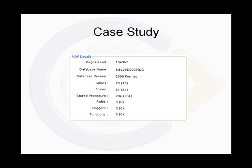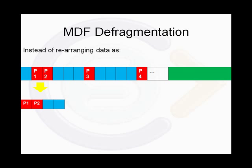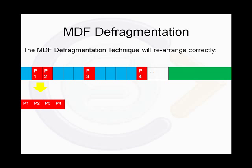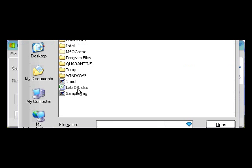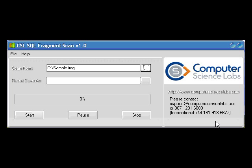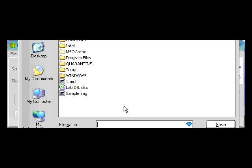This is why, instead of using a header-based recovery, Computer Science Labs has implemented a new technique to retrieve such fragmented files. Rather than losing fragments when the data is rearranged, the CSL MDF defragmentation technique will collect each fragment belonging to the file and reassemble them back into their correct arrangement. To achieve MDF defragmentation, the customer will first use the CSL SQL fragment scanning application to collect all the database fragments from their hard drive or image file.